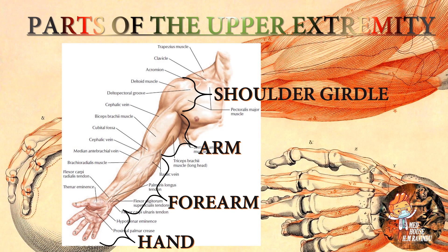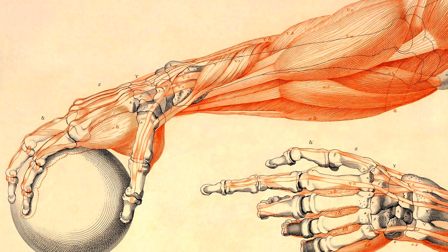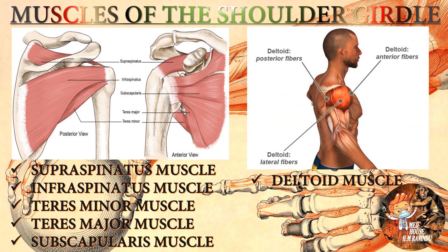Let's talk about the parts of the upper extremity. We divided the upper extremity into four parts: this region is called the shoulder girdle, this region is the arm, this region is the forearm, and this region is the hand.